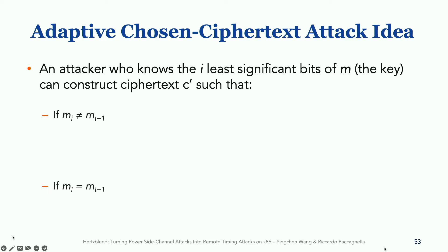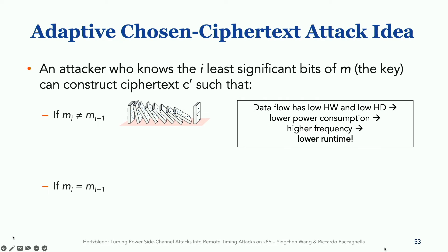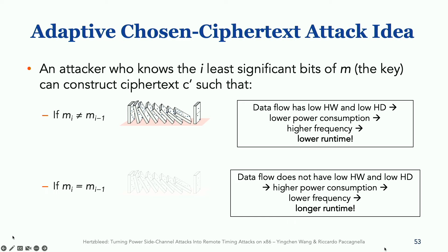And by exploiting such a behavior, we can extract the secret key bit by bit. For example, if MI does not equal to M minus one, there's a domino effect on zero, so that the data flow has no hamming weight, hamming distance, and the CPU runs faster, so it takes a shorter amount of time compared to the other case.